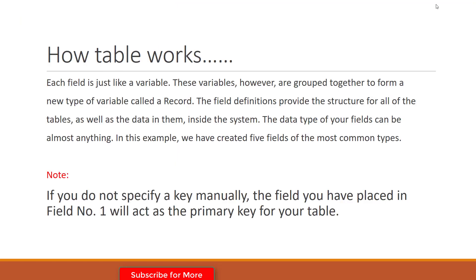Each field in the table is just like a variable. These variables are grouped together to form a new type of variable called a Record. A record is basically a collection of several variables or fields that contains meaningful data. The field definitions provide the structure for all of the tables as well as the data in them.